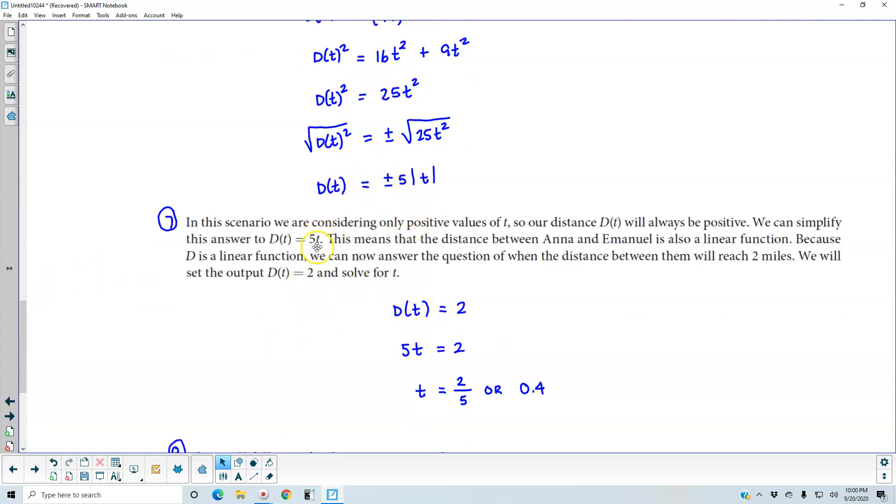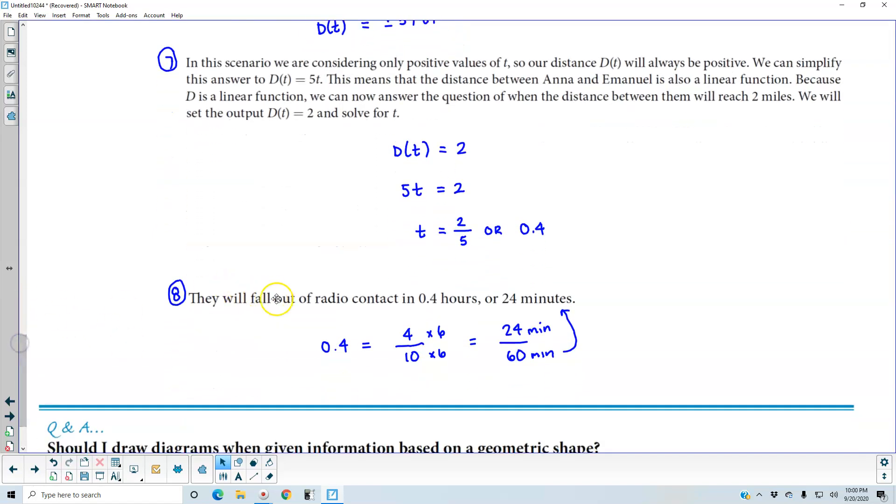Well, D(t) from what we solved for gave us 5t. So 5t is equal to 2. Solving for t, we divide both sides by 5, t is equal to 2/5 or 0.4. So they will fall out of radio contact in 0.4 hours or 24 minutes.